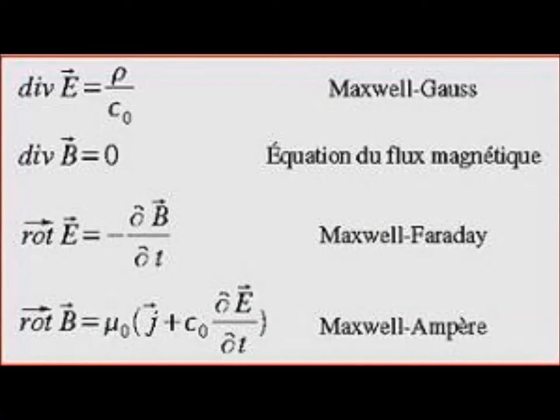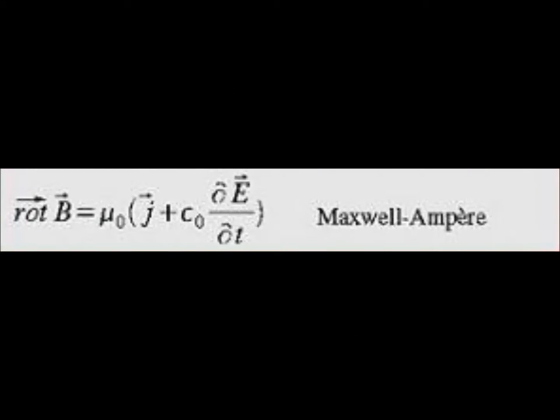A consequence of the Clemence experiment is that the Maxwell-Ampere equation is false. The magnetic field of an electric current is equal to the geometric sum of the magnetic moments of the electrons in the conductor. The second term of the second member of the equation makes no sense.